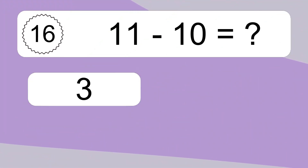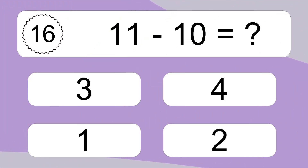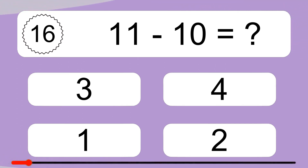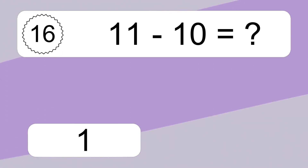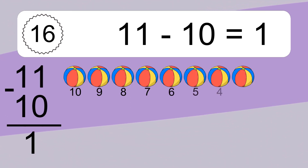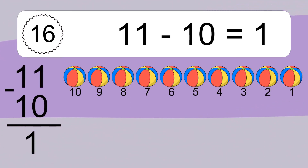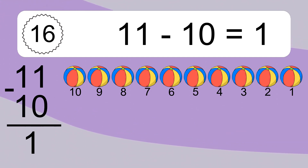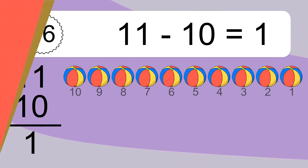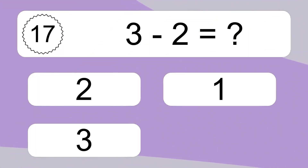11 minus 10 equals what? 11 minus 10 equals 1. Let's count it: 10, 9, 8, 7, 6, 5, 4, 3, 2, 1.